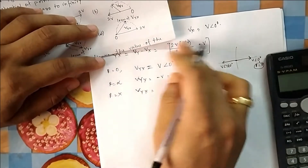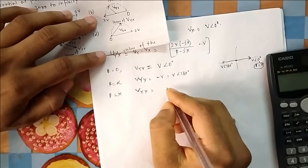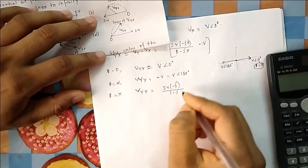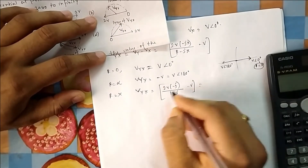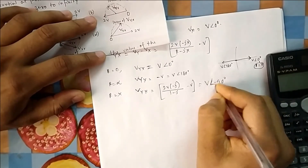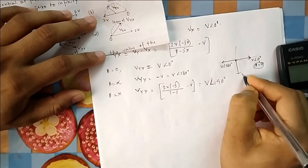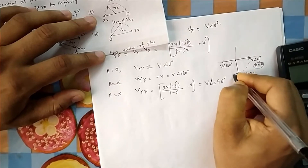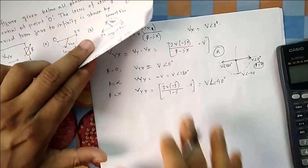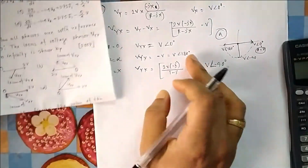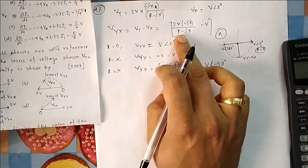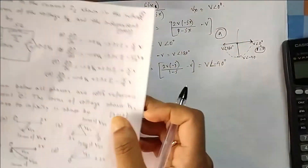With R equal to X, I take X as a common factor and cancel it, giving 2V times (minus j) divided by (1 minus j), minus V. Calculating this expression gives V at an angle of minus 90°. So the phasor moves from V∠0° to V∠180° through the lower half — that matches the correct option. Play with the options for phasor diagram questions by changing the variable and checking a few values.